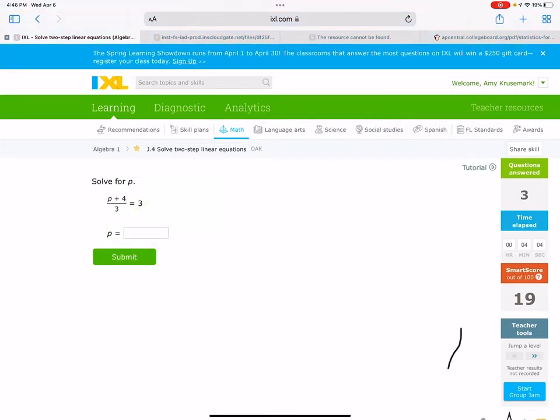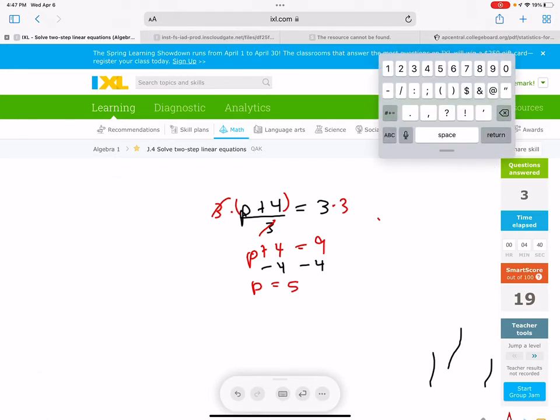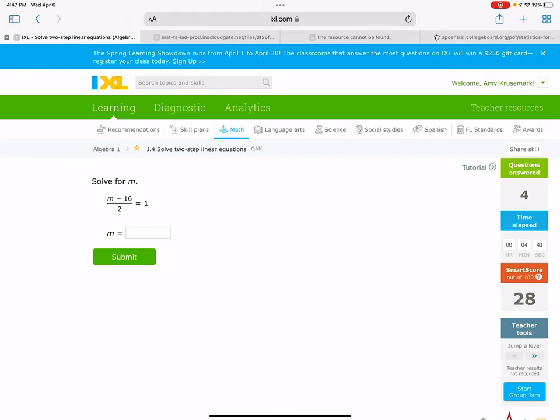Next question. We have P plus four divide by three is three. So we see it's divide by three. So we're going to multiply by three on both sides. This will cancel, leaving us P plus four. And this side is nine. Now we're going to subtract four on both sides. So we get five. Beautiful.